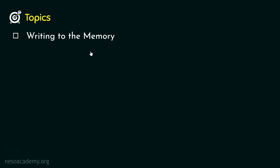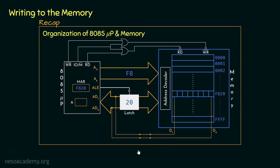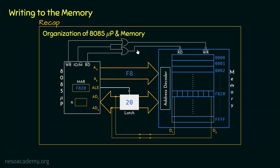In this session we will learn writing to the memory — that is, how the 8085 microprocessor is going to write at a particular location within the memory. We completed the entire organization which will facilitate data transfer, including the control signals and memory signals. We established the connections between them forming this combinational circuit, and we are going to use the same structure today to illustrate how the microprocessor is going to write to the memory.